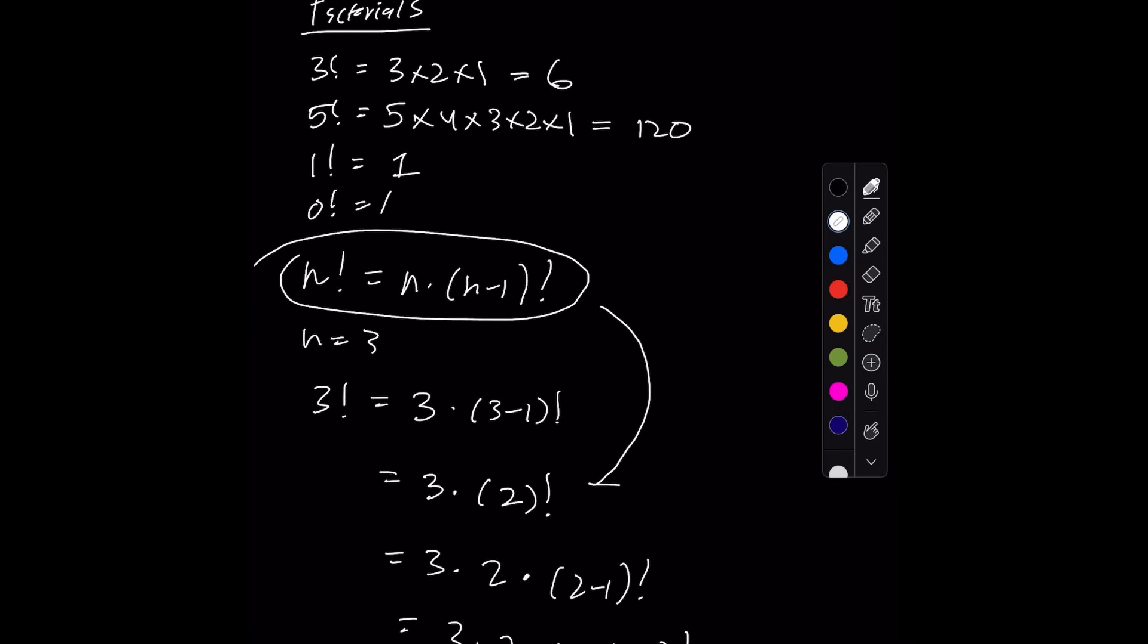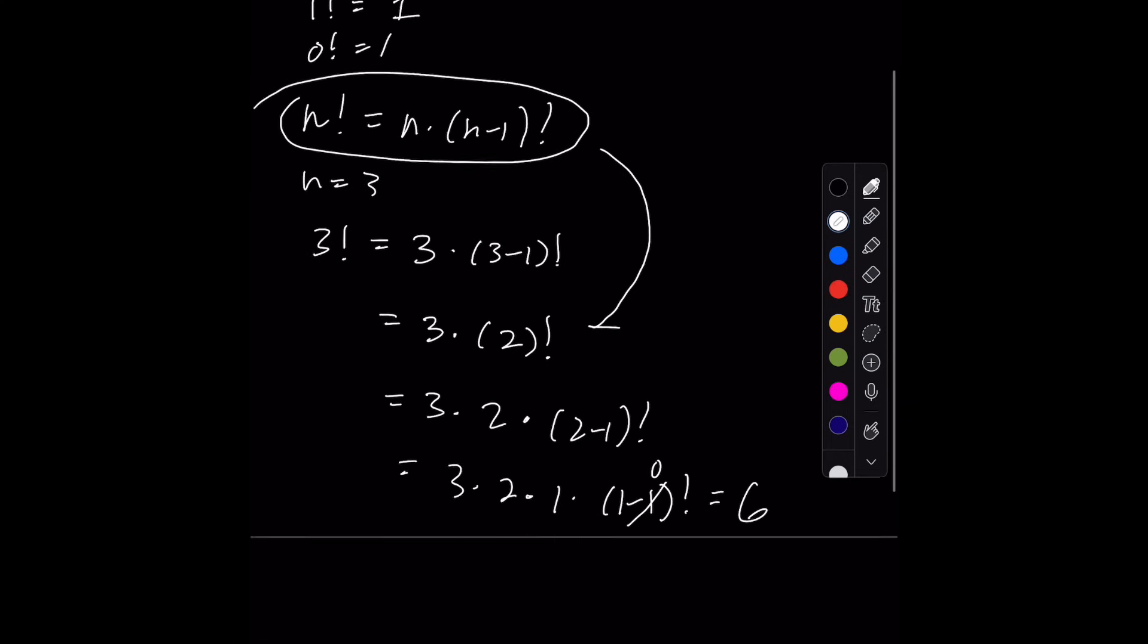us 1 times 1 minus 1 factorial, which we know is just 0. And 0 factorial is, well, 1. So we know the formula works.